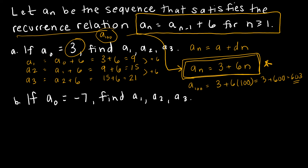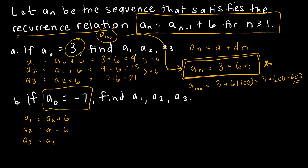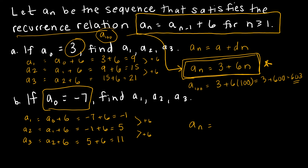For part two, we use the same recurrence relation but with initial condition a(sub 0) = -7. We still compute a(sub 1) = a(sub 0) + 6, a(sub 2) = a(sub 1) + 6, a(sub 3) = a(sub 2) + 6. So a(sub 1) = -7 + 6 = -1, a(sub 2) = -1 + 6 = 5, a(sub 3) = 5 + 6 = 11. The closed form would be a(sub n) = -7 + 6n.